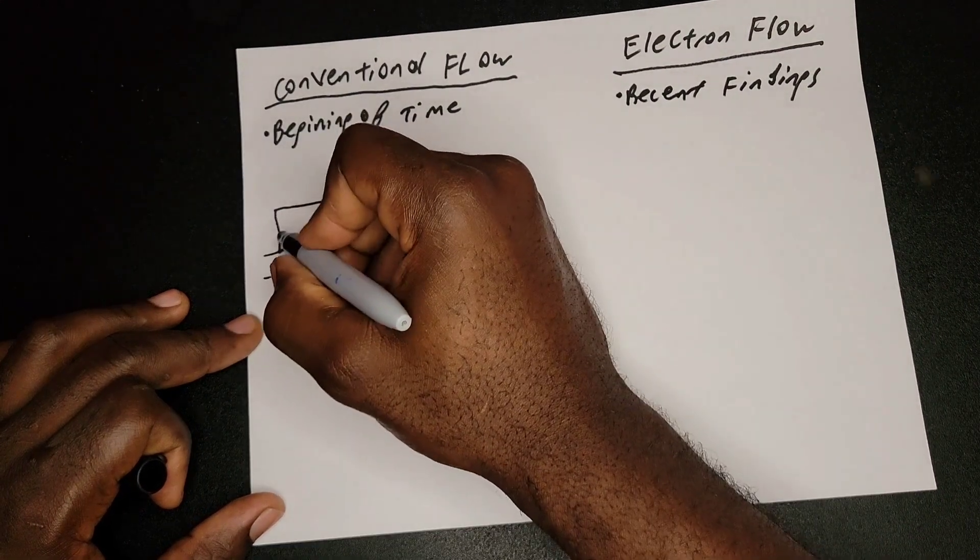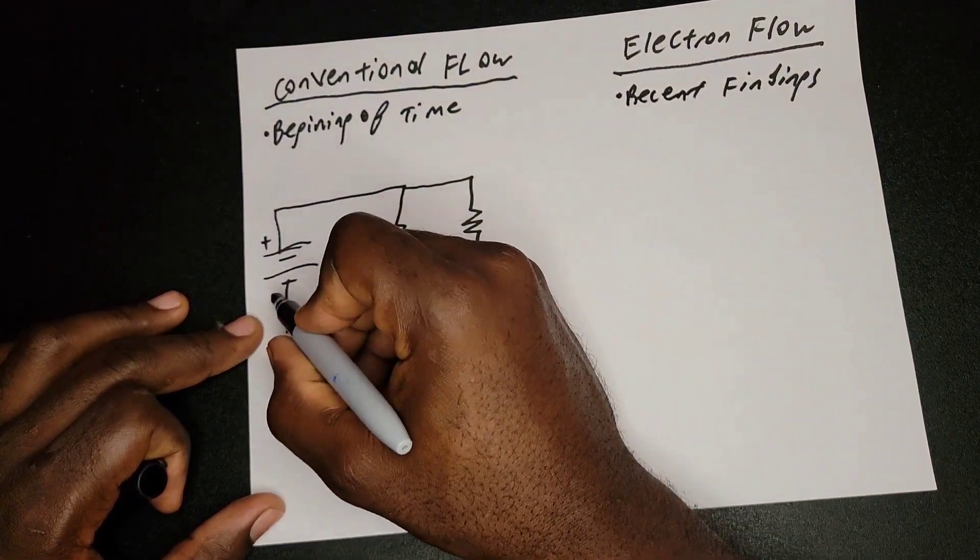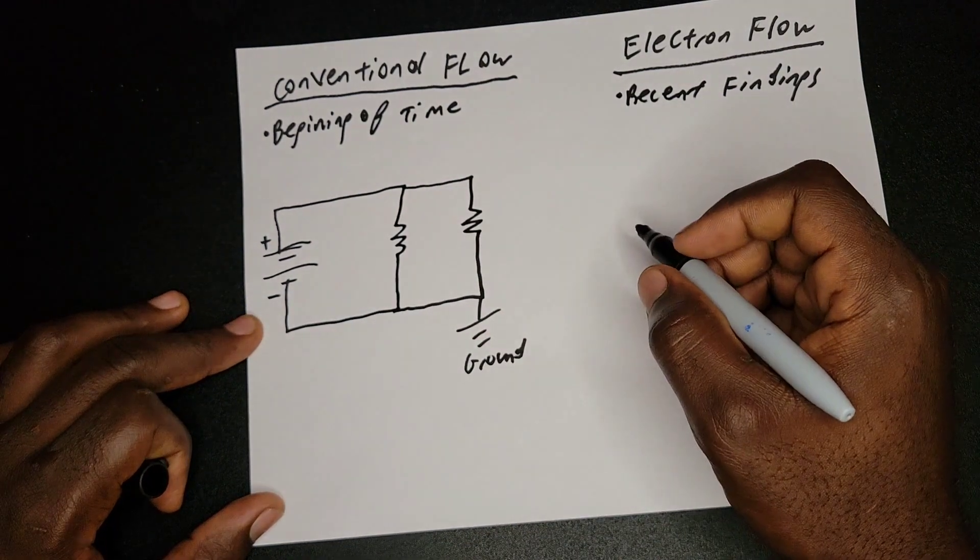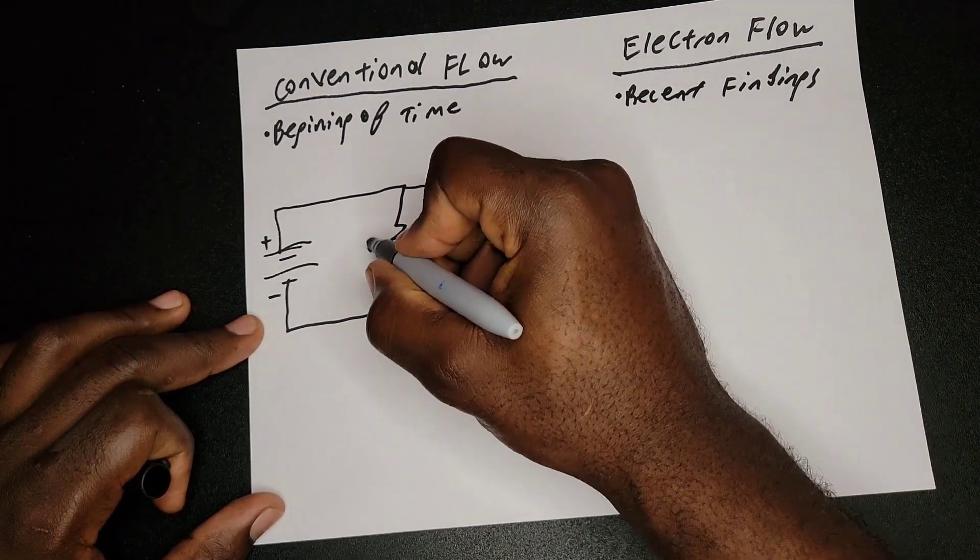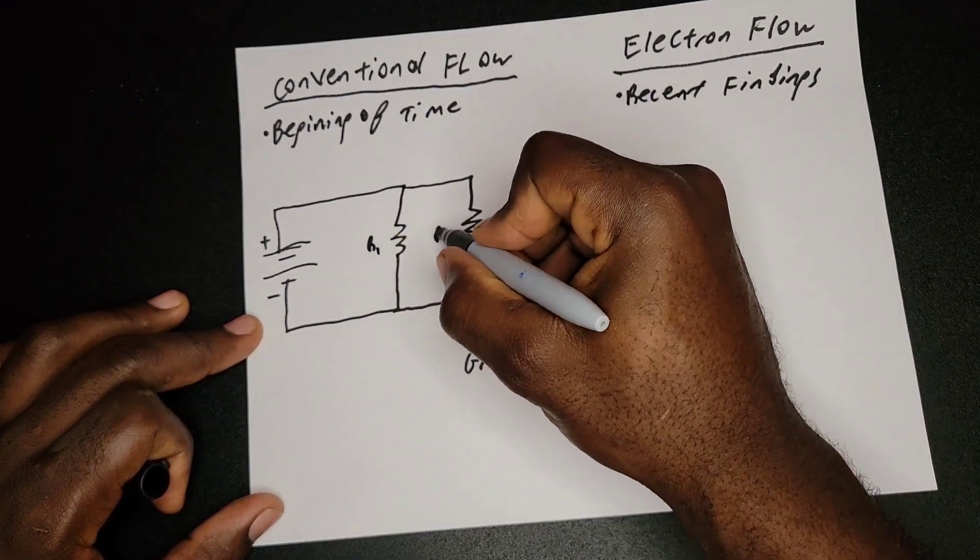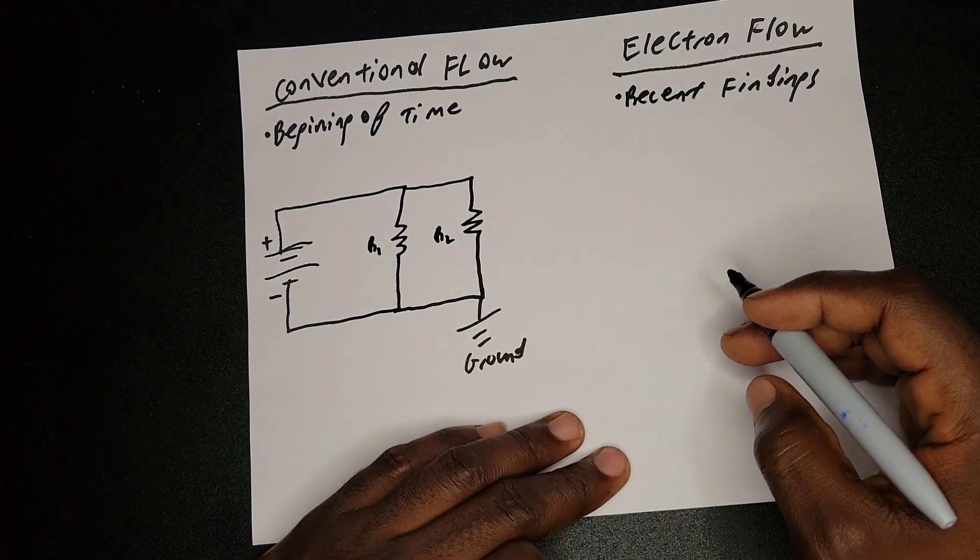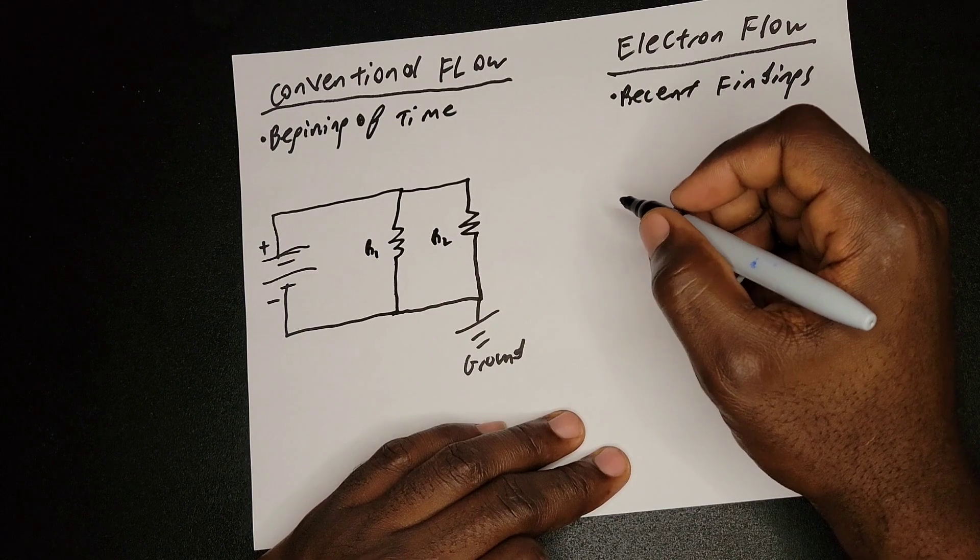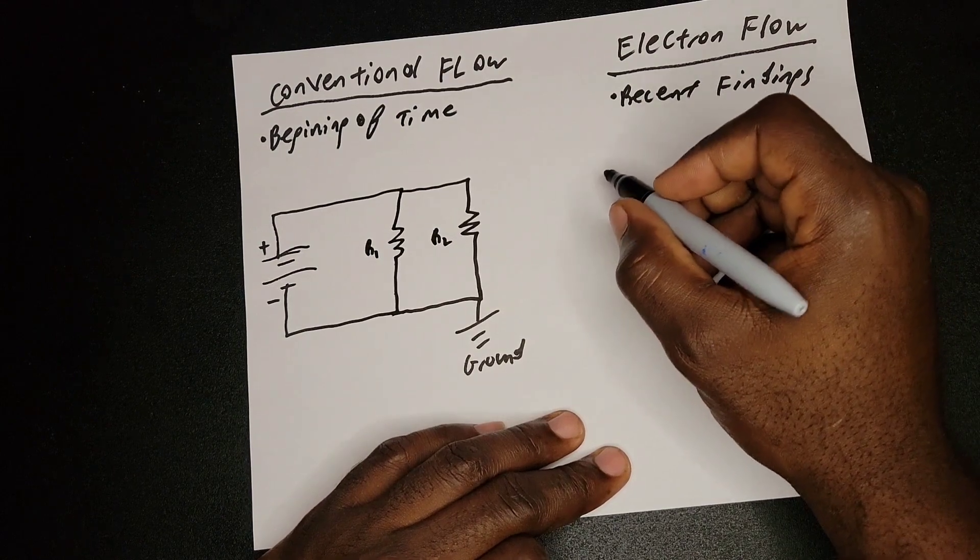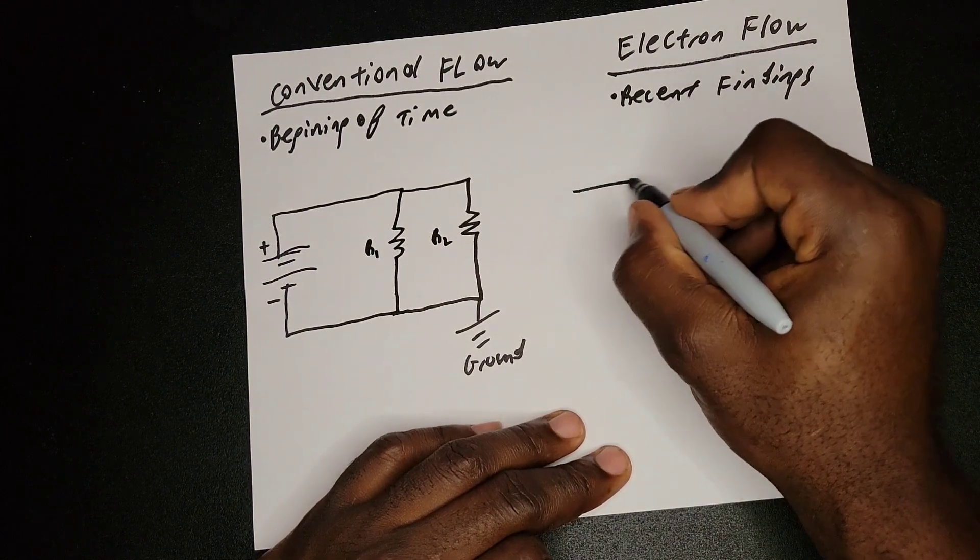This is my positive, this is my negative. This is R1, this is R2, resistor 1 and resistor 2. So now I am going to draw the same circuit on the electron flow side.